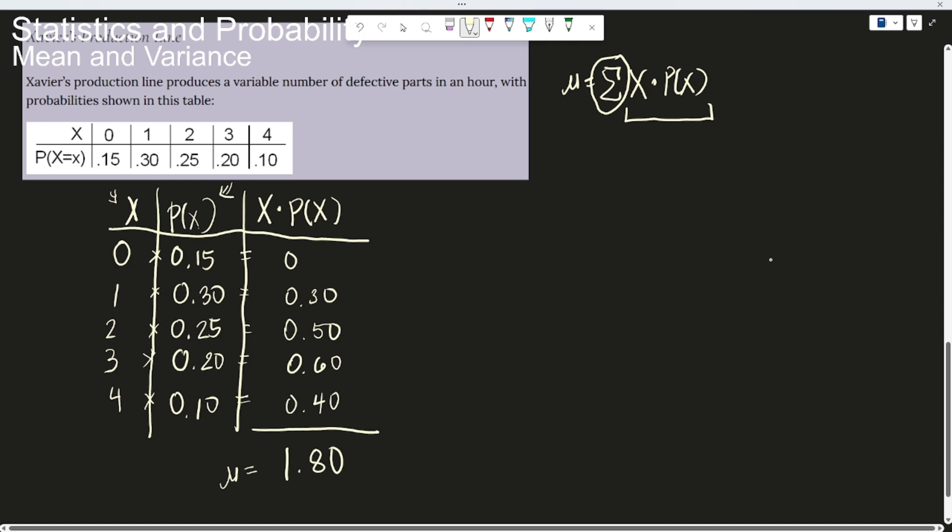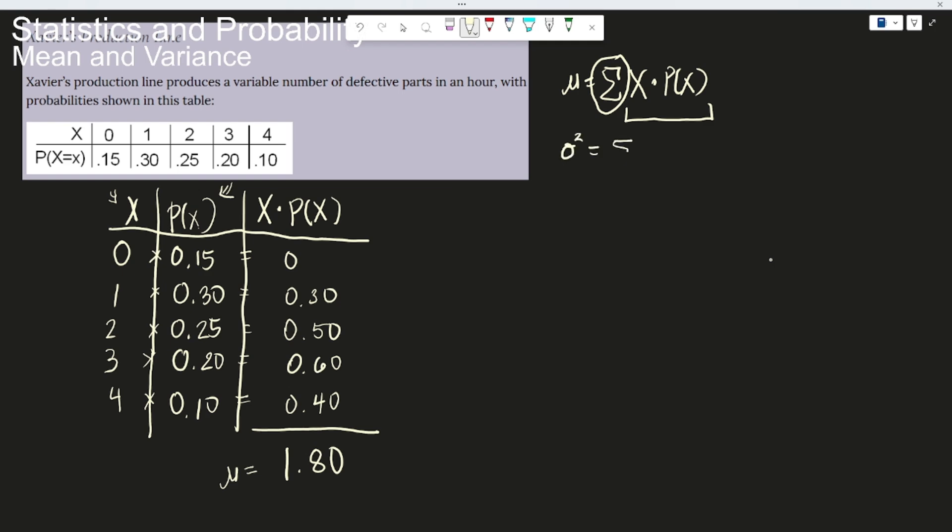For the variance, so let's recall the formula. We actually have two formulas for this that we use. The first formula would be the summation of x minus mu squared times p of x. Okay?